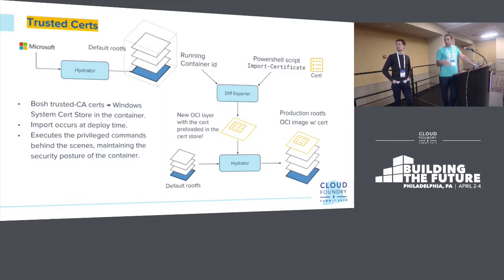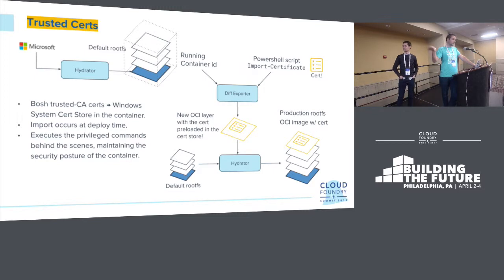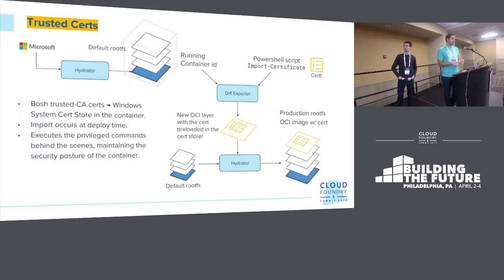One of the new features alluded to was trusted certificates — a novel way to inject certificates into the system trust store. It spins up a container, applies a PowerShell certificate command. When you have a certificate, you need it on disk and in the registry, which requires elevated administrator-level privileges. The container runs as an elevated user, runs a diff exporter which creates a new OCI layer, then uses the hydrator to create a new root FS on each of the cells, so the certificate is baked into the root FS.